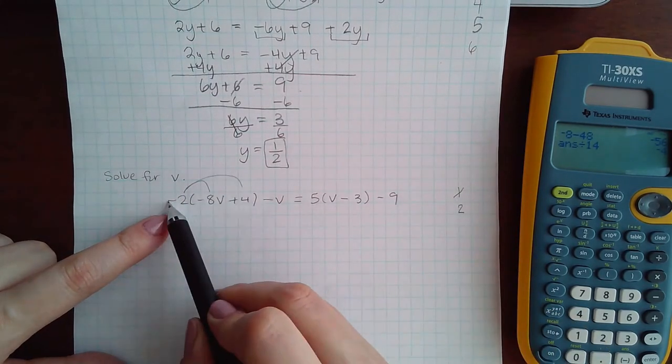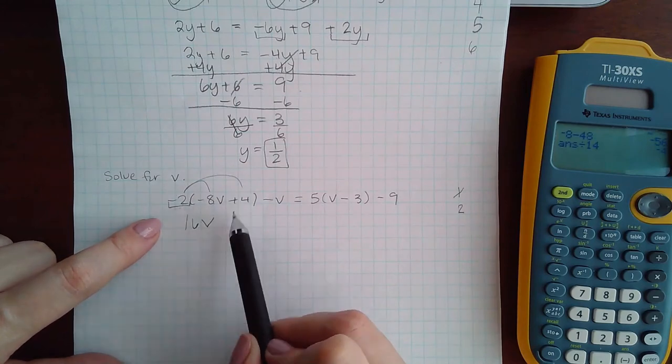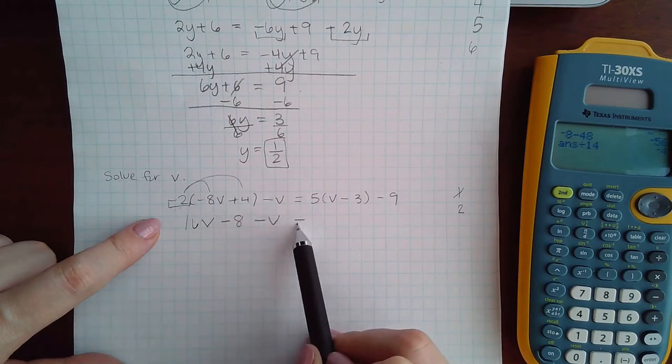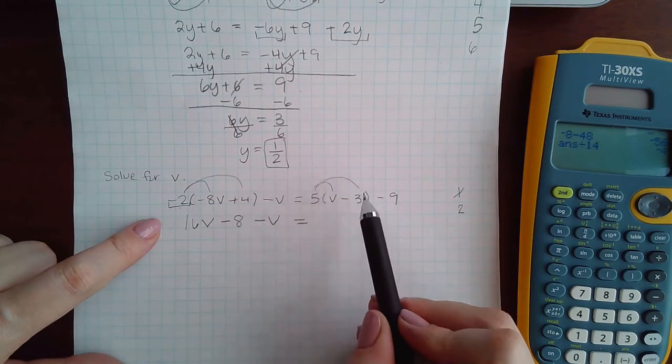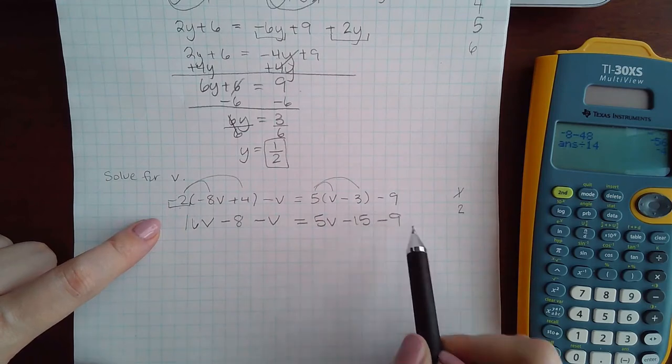So we're distributing a negative two this time. So that becomes positive 16v negative 8. This minus v will come down. Here we're going to distribute the five. 5v minus 15. Bring down the minus 9.